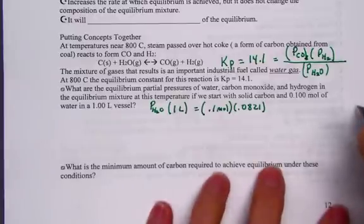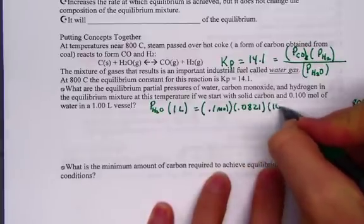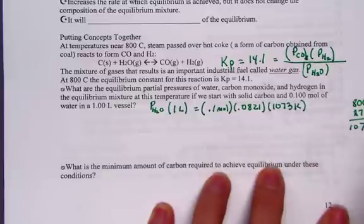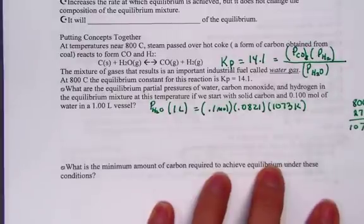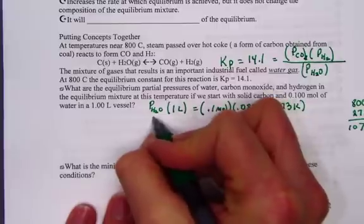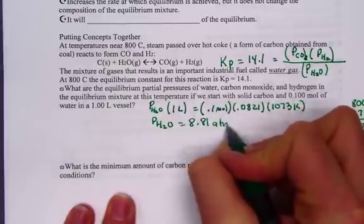Given the Kelvin temperature, 800 plus 273 gives us 1073 Kelvin units. Pulling out for the partial pressure of water, we will hit nRT divided by V. I am finding 8.81 when I solve for the partial pressure of water, 8.81 atmospheres.